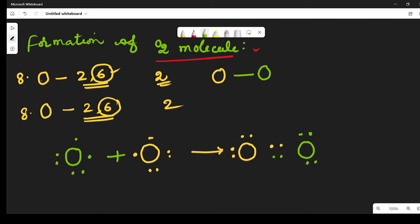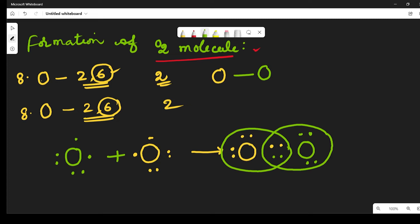When the two oxygen atoms each contribute 2 electrons, the first oxygen atom gets octet configuration by sharing all the electrons, and the second oxygen atom also gets octet configuration by sharing all the electrons. This means 2 bonds are formed — this is called a double bond. In the oxygen molecule there is a double bond, and the 2 bonds are covalent bonds.